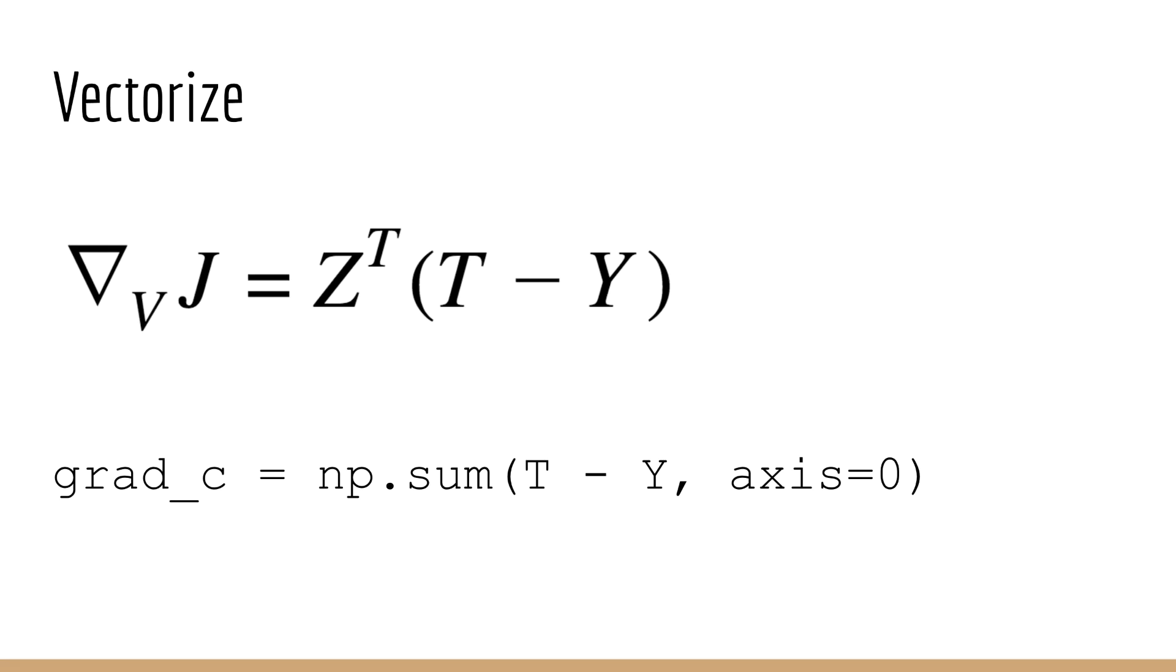As usual, we would like to vectorize these operations so that they are more efficient in code. Just like before, the gradient of J with respect to V is Z transpose times T minus Y. Unfortunately, there isn't really a convenient notation for the sum over one index of a matrix, which is what we have for the bias term c. So we'll just show what it would look like in NumPy.